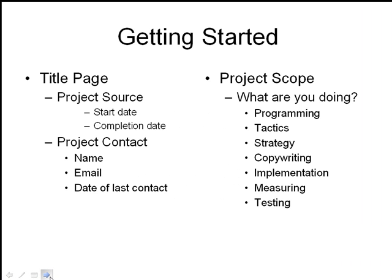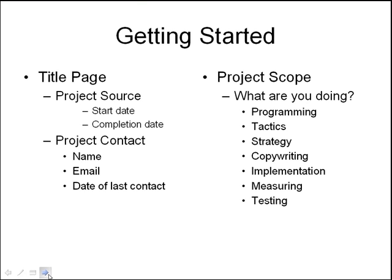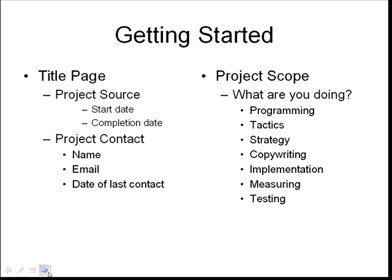The first part of the report should include a title page. On that title page you want to mention things like where you got the project from, what day you started the project, when you're anticipating the project to be finished, and who you're dealing with at the company. You'll want to get their name and contact information like email, address, phone numbers, fax numbers — anything that makes it easier to get in contact with your client. You'll also want to include the date of your last contact and a note about what you contacted them about.